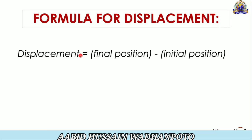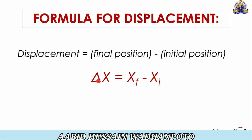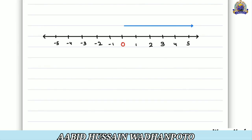Displacement has two points: Final Position and Initial Point. The Displacement formula is: Final Position minus Initial Position, i.e., ΔX = XF − XI, where F is for the Final Position and I is for the Initial Position. This means the body starts, goes through any distance or displacement, covering a change — called ΔX — which is the Displacement.